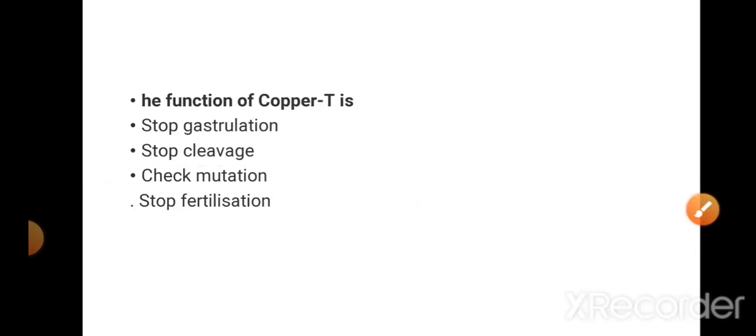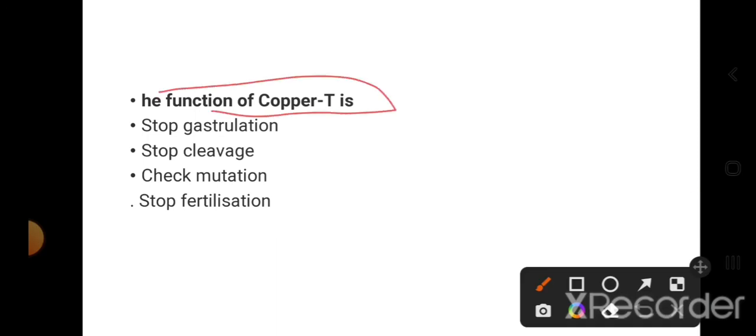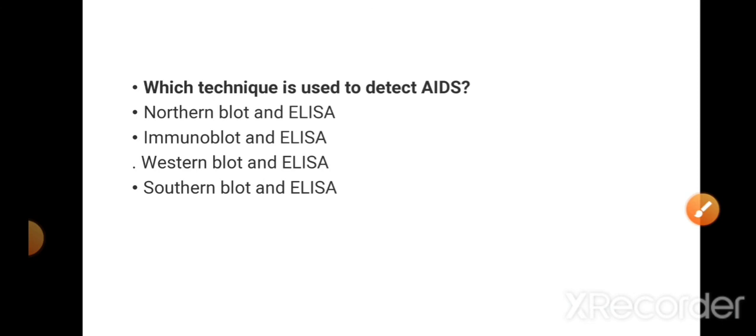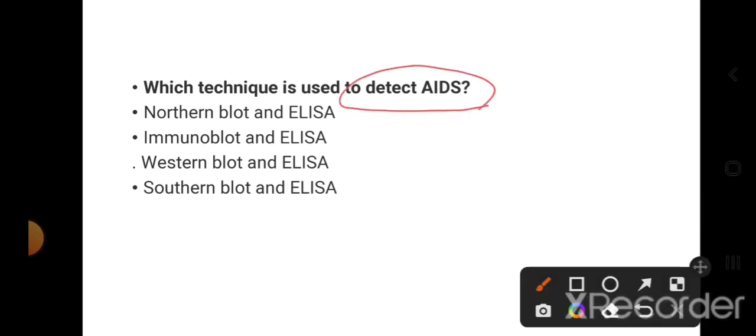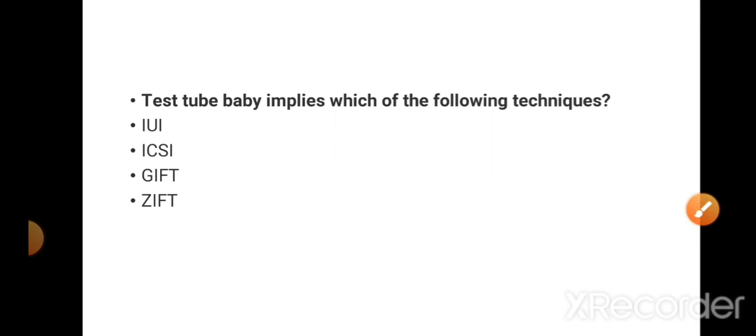What is the expansion of MTP? MTP is medical termination of pregnancy. This is the right answer. The function of Copper-T: its main function is to stop fertilization. Which technique is used to detect AIDS? To detect AIDS, we use Western blotting and ELISA. ELISA tests for antigen and antibody. Western blotting is for the detection of DNA.